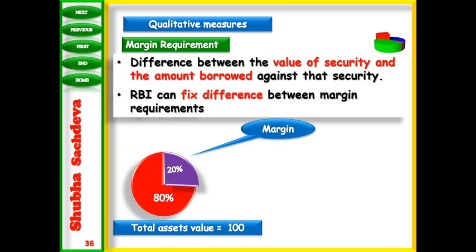So here, one of the qualitative measures is margin requirement. What is margin requirement? It is the difference between the value of security which we keep against the borrowing and the amount we borrow as a loan. The difference between the amount of loan and the security or collateral which you keep against it is called the margin.